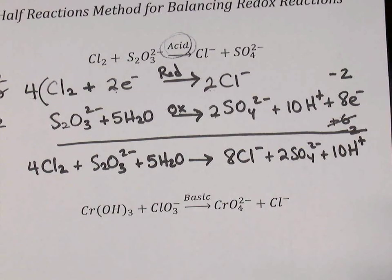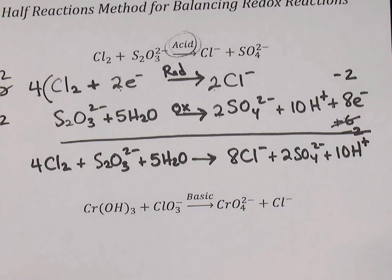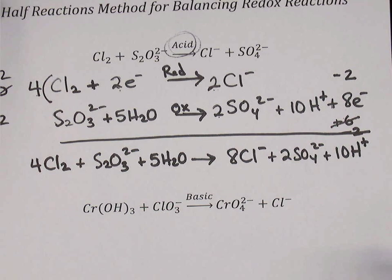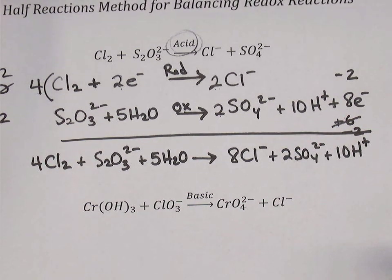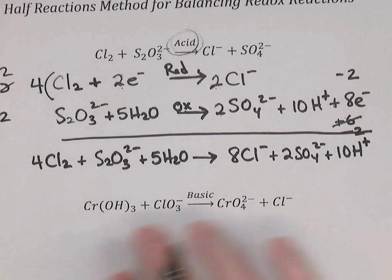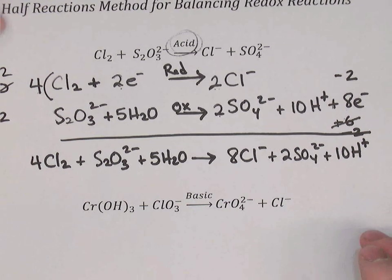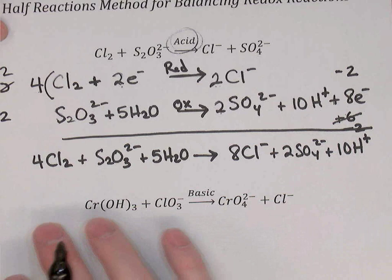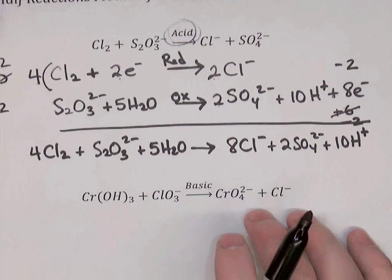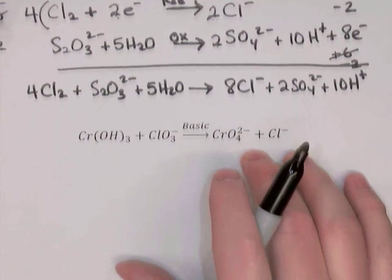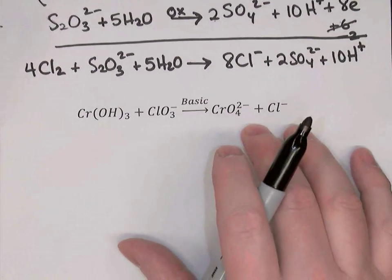The steps were complicated, but look at these coefficients — if you had tried to balance that equation by inspection, as you would have done in grade 10 or 11 chemistry, that would have been very difficult. This process is complicated, but it leads to the right answers every time.